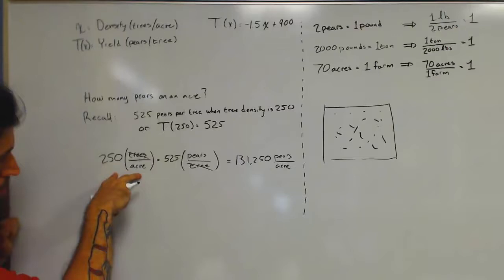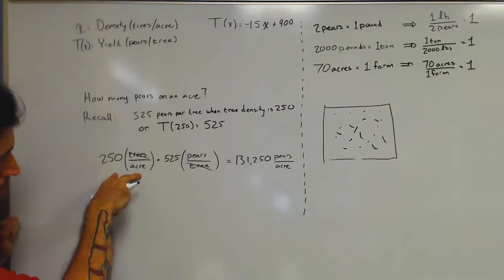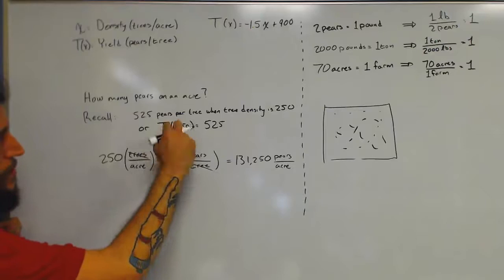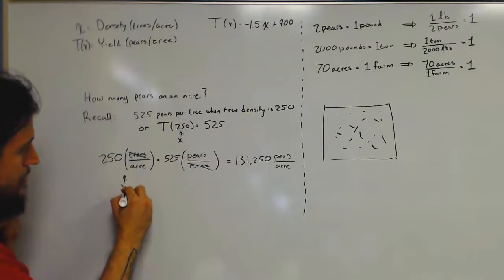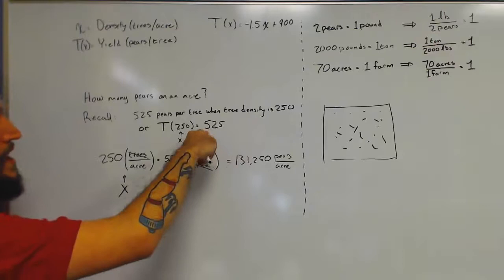So let's go back to this. This figure here, remember that's 250 trees per acre, that's the tree density. That represents an x value. This 525 represents the actual yield per tree. So that is actually represented by T of x. This gives us our yield per tree.